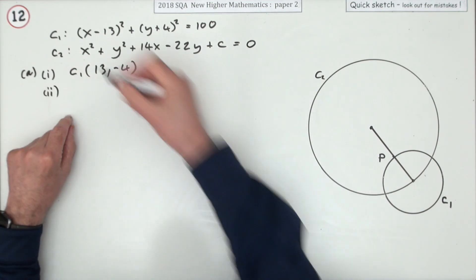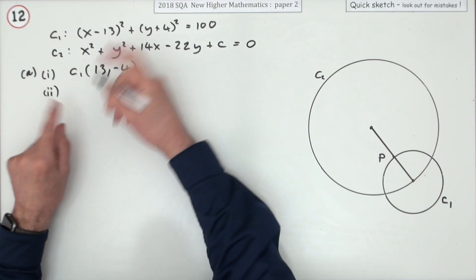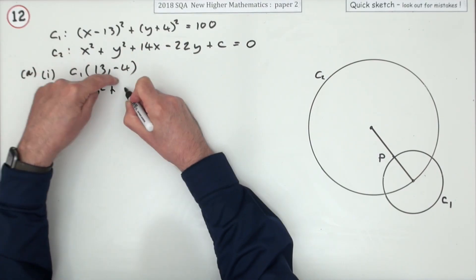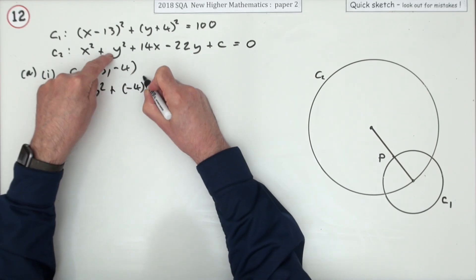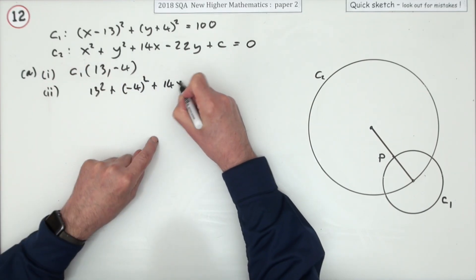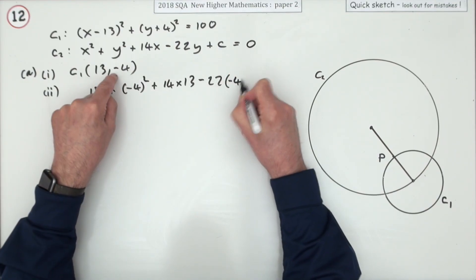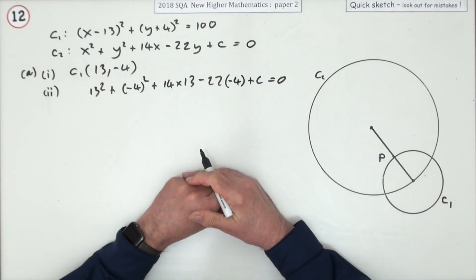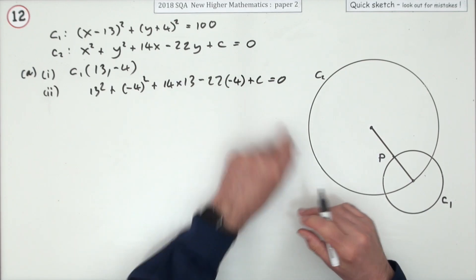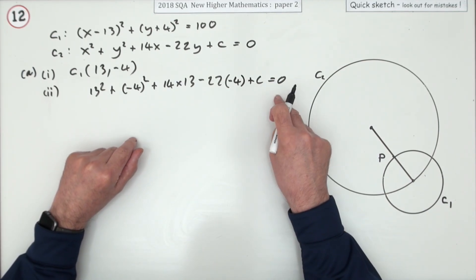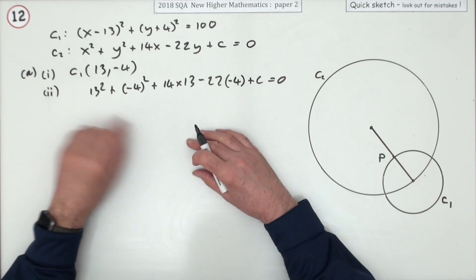Now it just looks like a lot of arithmetic for just one mark. So x is 13, so you've got 13 squared, and y is negative 4, so negative 4 squared, plus 14 times 13 minus 22 times negative 4 plus c equals zero. You can type that into your calculator, but it does say show that c equals negative 455, so you can't really preempt the answer.